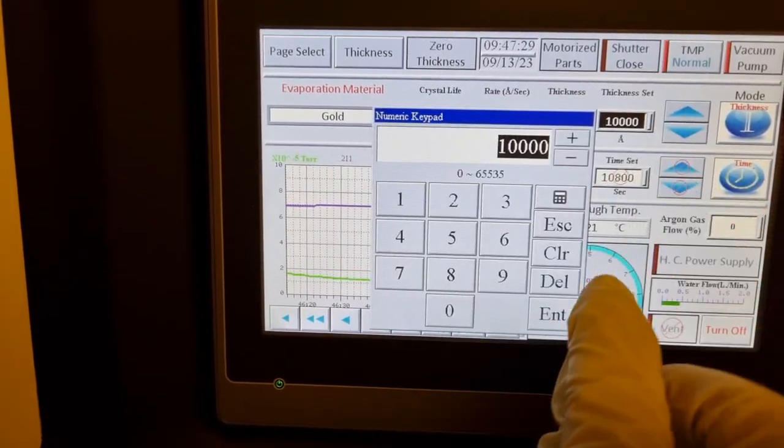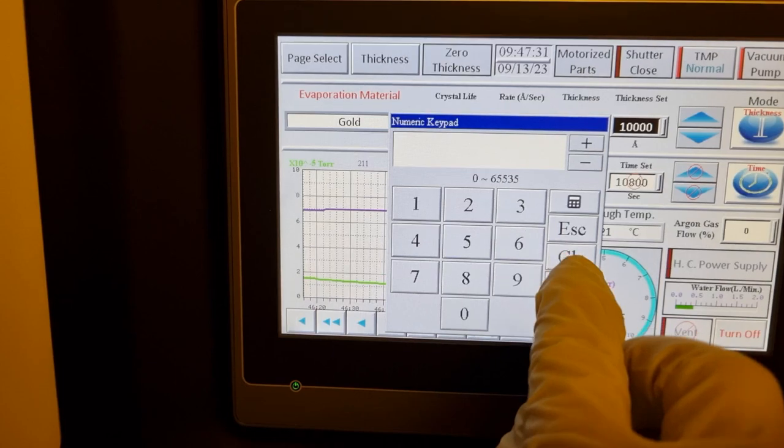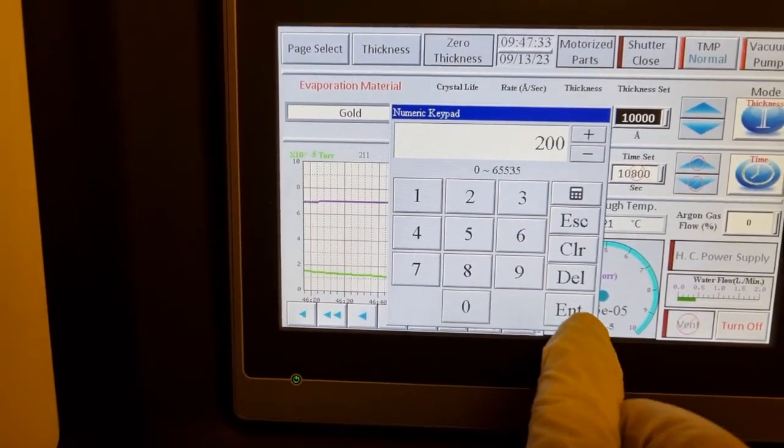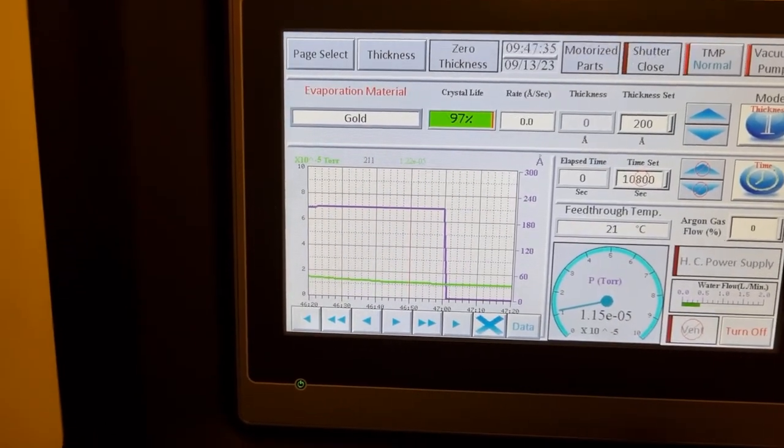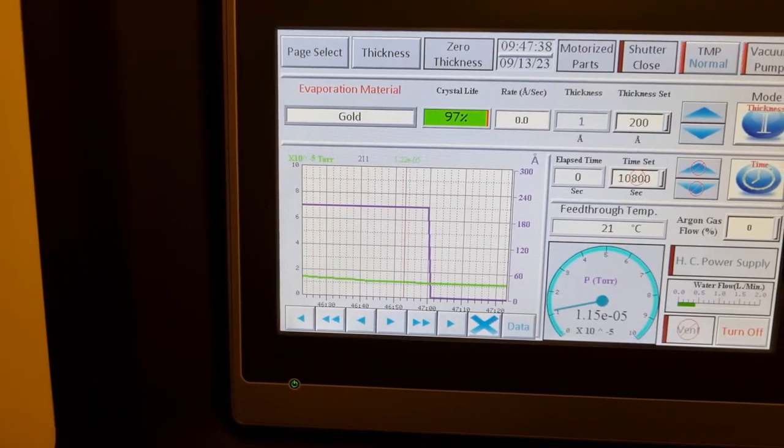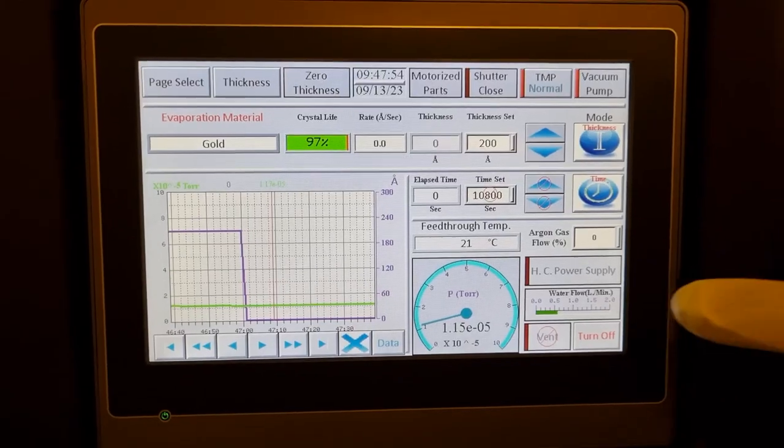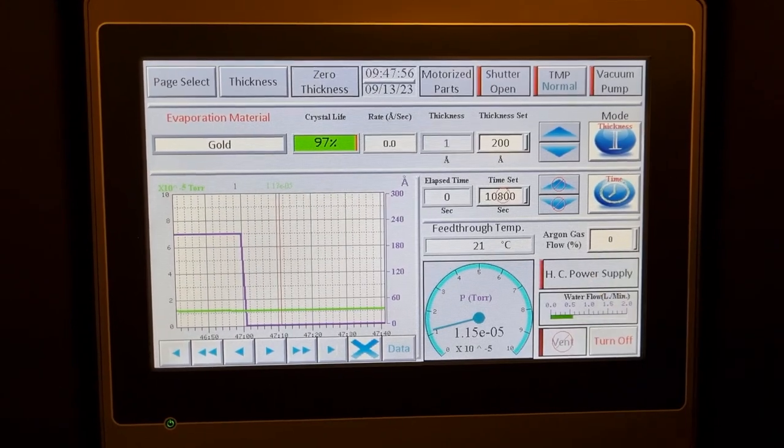This will cause the high current power supply to shut off once this amount of thickness has been reached. Some additional thickness will grow even after the current is shut off due to residual heat and molecules in the air.